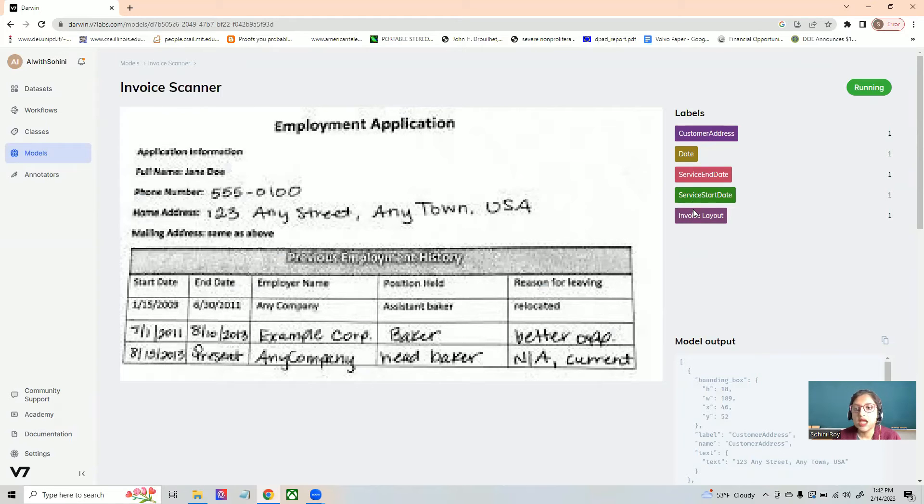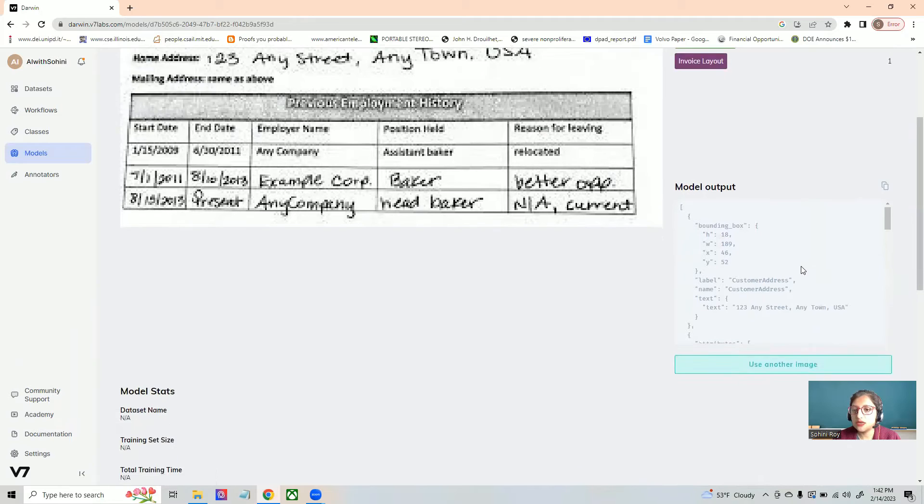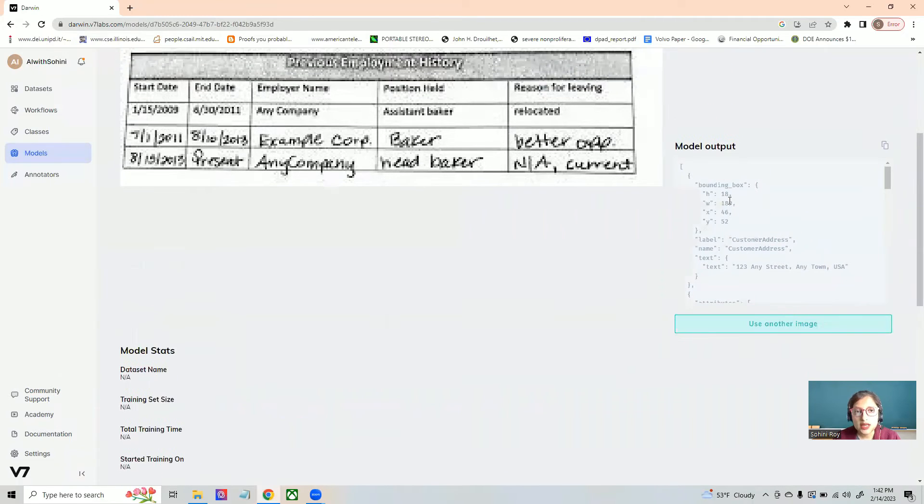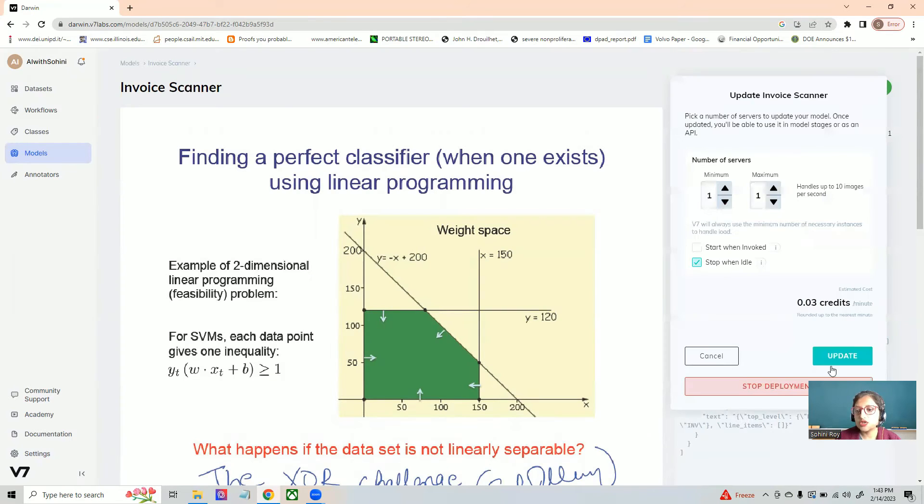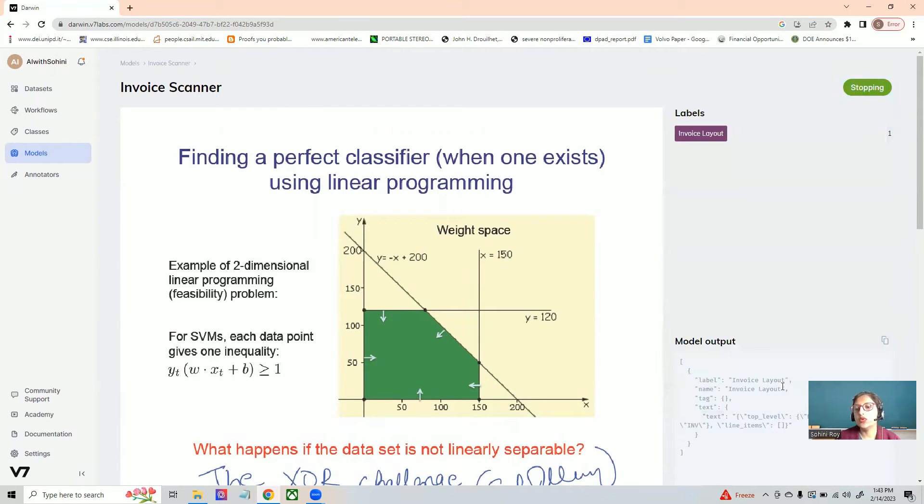And here you can actually see these are all of the different labels that come out. So the customer address, the date, the service date and the layout. And if you want to check the outcome, you can actually see that the address is correctly extracted. So the handwritten text actually ends up getting extracted pretty well. So now let's try to stop this one and look at another model.